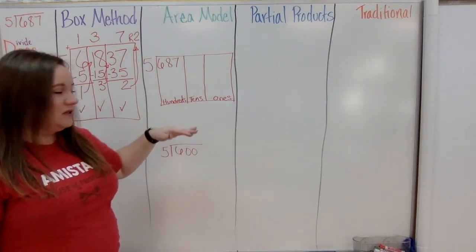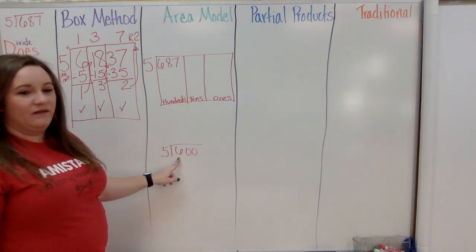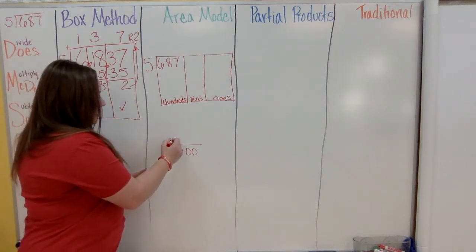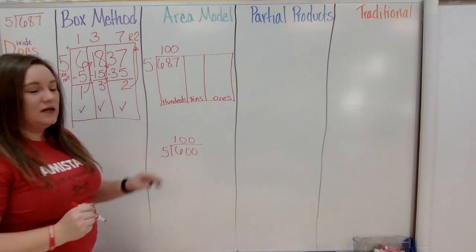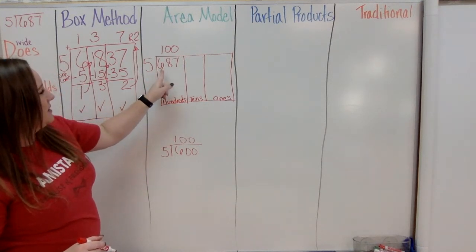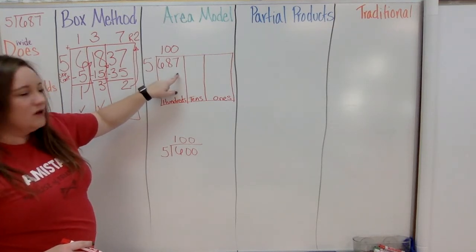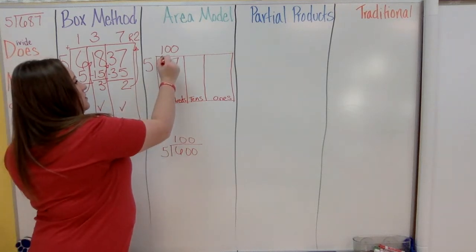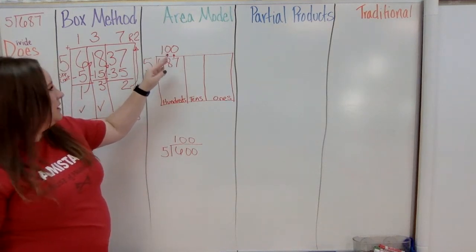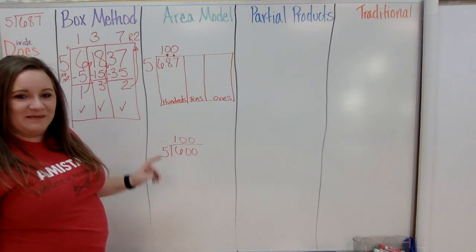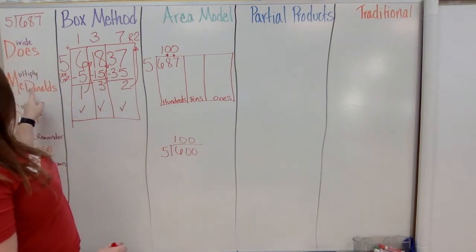So I can see that I can only put 5 into 6 one time, so it's going to be 100 up here. I sometimes tell students to look at how many other digits there are — there are two other digits, so those essentially become zeros, giving you 100. That seems to make more sense to most students. Now multiply: 5 times 100 is 500.